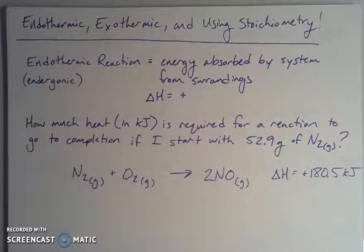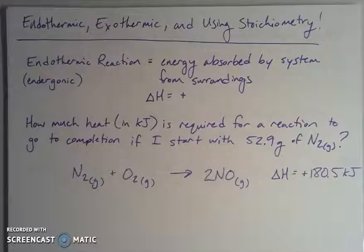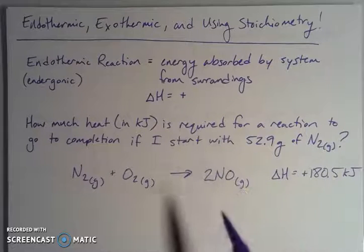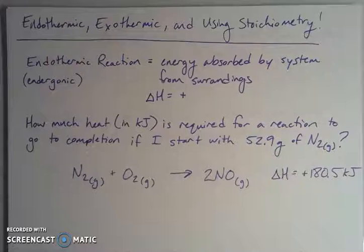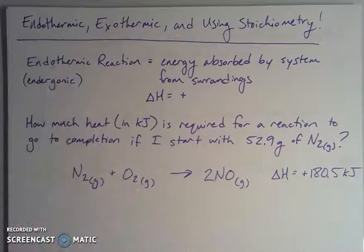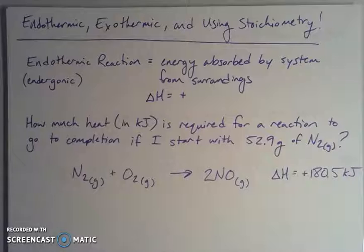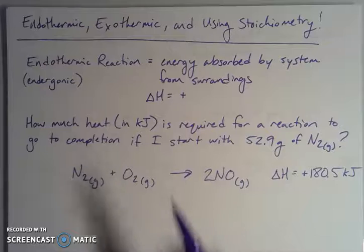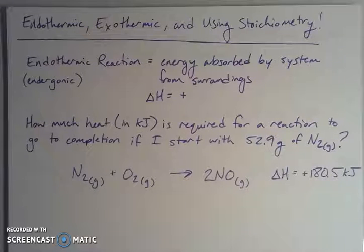The delta H is the enthalpy — the change in heat of the reaction going from reactants to products. An endothermic reaction is one in which energy is absorbed by the system. That system needs to absorb energy from the surroundings in order for the reaction to occur. I prefer the term endothermic because 'therm' relates to heat — heat is coming in, heat is being absorbed. The sign on my delta H will be positive for an endothermic reaction.